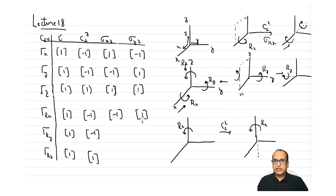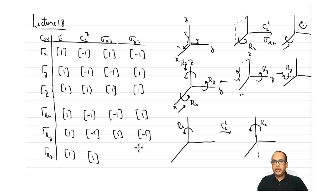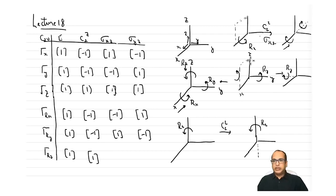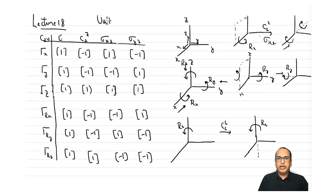For σxz on Ry: the character remains +1. For σyz on Ry: the character is −1. For Rz, since both σxz and σyz planes contain the z-axis, in both cases the character is −1. If this is unclear, try it with a paper strip arrow or raise it in the interactive session. You can also try these unit vector transformations for other point groups.